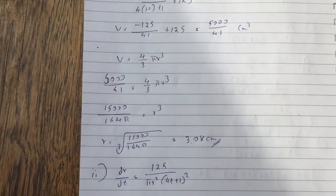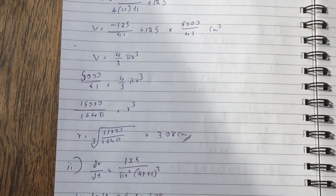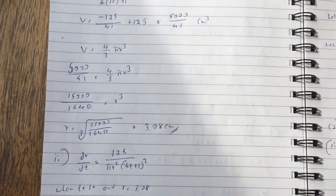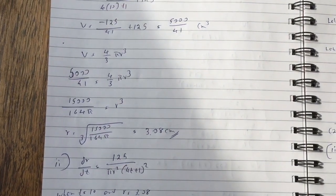If you plug that value into the v equals 4 thirds pi r cube equation, and if you simplify and cube root it, you get radius equal to 3.08 centimetres.